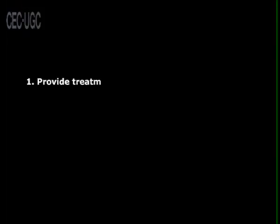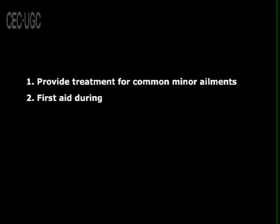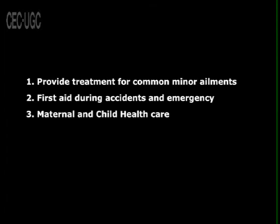Village health guides are persons with an aptitude for social service and are not full-time government functionaries. The village health guides scheme was introduced on 2nd October 1977. Functions of village health guides: number one, provide treatment for common minor ailments; number two, first aid during accidents and emergencies; number three, maternal and child health care; number four, family planning; number five, health education.